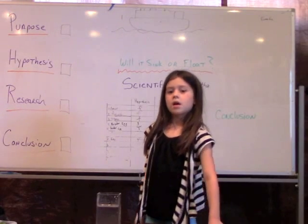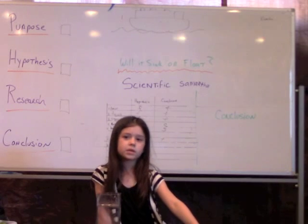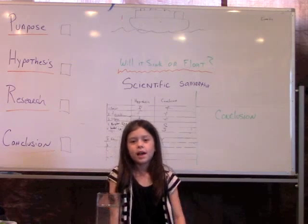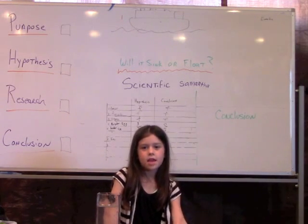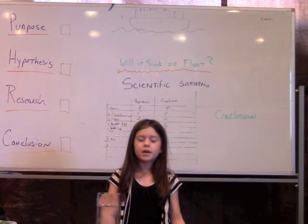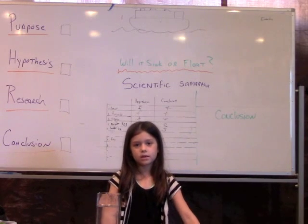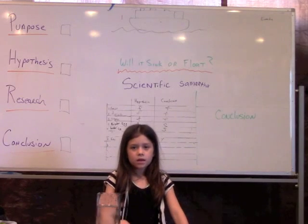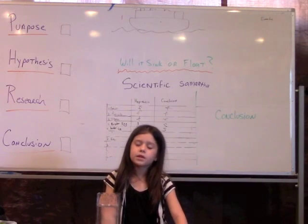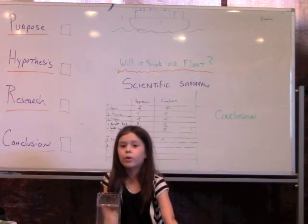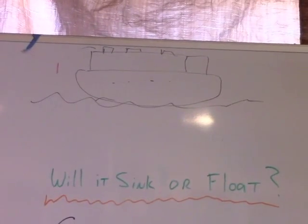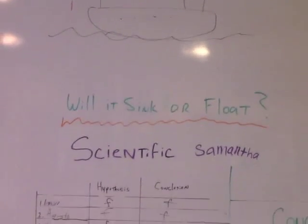Can we also talk about why things float and why things sink? We talked about buoyancy — because it has more buoyancy, and that makes it lighter. The item is lighter than the water. And why do things sink? Because they're more dense — density. Why does a bowling ball sink and a basketball doesn't? Because the basketball has more buoyancy and the bowling ball has more density.